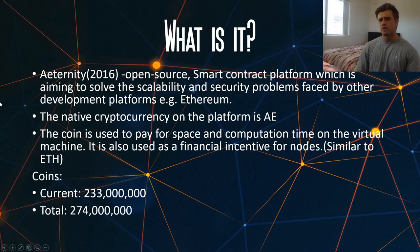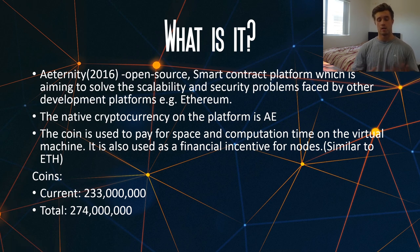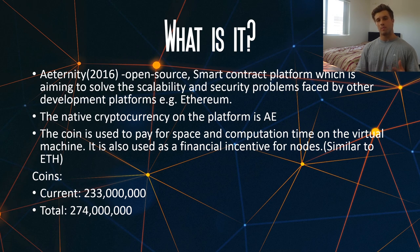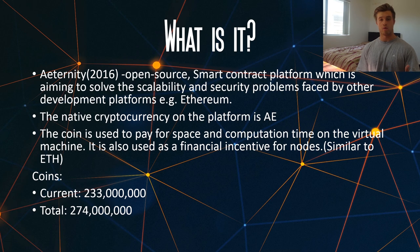So what is Eternity? Well, Eternity, which was made in 2016, is an open source smart contract platform which aims to solve the scalability and security problems faced by current development platforms, for example Ethereum. The native cryptocurrency on the platform is AE, and the coin is used to pay for space and computation time on the virtual machine and also as a financial incentive — basically the same operation as ETH does on the Ethereum network.